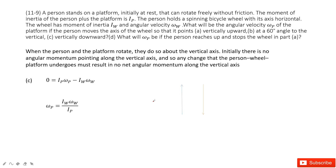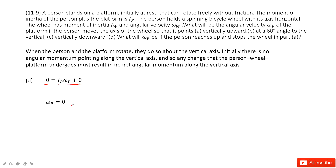The next part is about the wheel pointing vertically downward. That means its direction is negative. We still apply conservation: initial angular momentum equals final angular momentum, giving us I_p·omega_p, and the negative sign tells us the direction for the wheel. We solve the equation and get the final answer. The last part tells us the wheel is stopped, so the angular momentum for the wheel is zero. Therefore, initial angular momentum equals final angular momentum, which is the person's angular momentum plus zero, so omega_p must be zero.